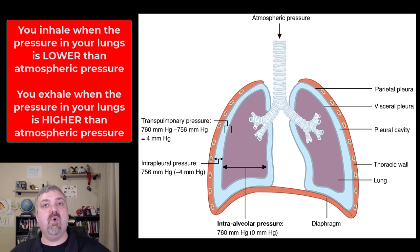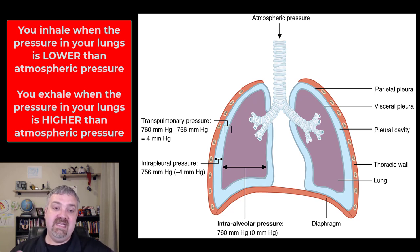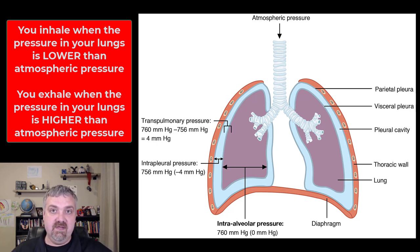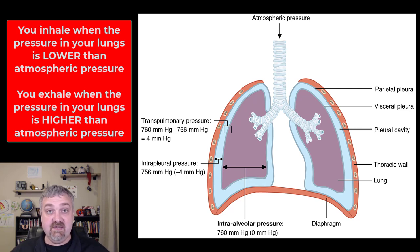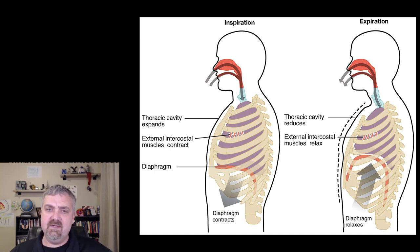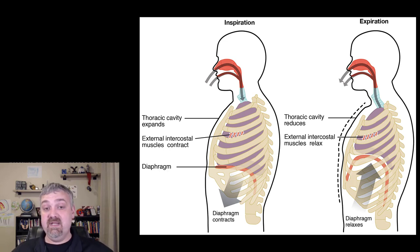The other pressures here: intra-alveolar pressure or intrapulmonary pressure is the pressure inside your lungs, and that changes based on whether you're inhaling or exhaling. You also have intra-pleural pressure, which is always about negative 4 millimeters of mercury, because your lungs want to recoil and deflate but they're held in place by the tension created by your visceral and parietal pleura. Unless your lungs are deflating due to a pneumothorax, that's generally not in play. The two key pressures we care about are intra-alveolar or intrapulmonary pressure and atmospheric pressure.